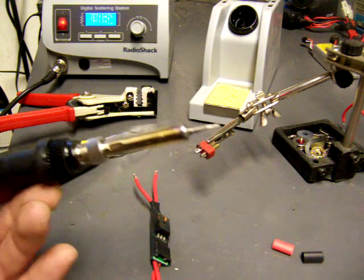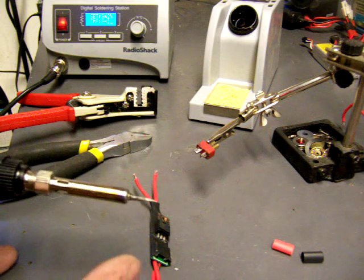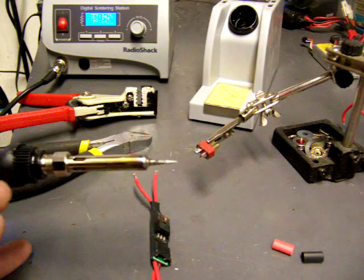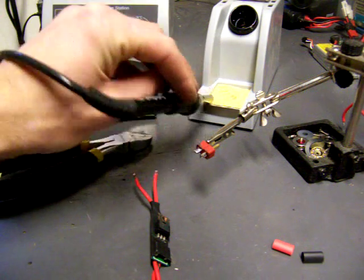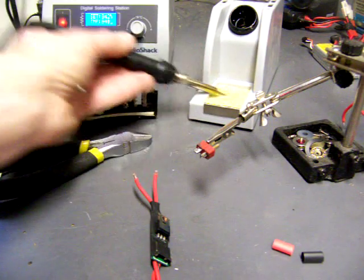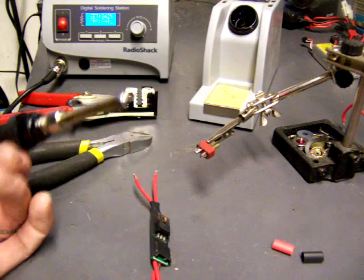As far as soldering iron, again, before you turn it on, if your tip's real dirty, clean it with a little bit of real fine sandpaper or something before it's on. And then always have a wet sponge to keep your tip clean. You'll save yourself tips and aggravation too when trying to do it.